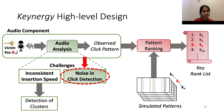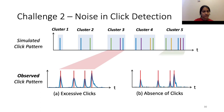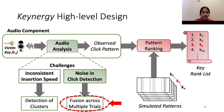Now that we've solved the first challenge, we move on to the second challenge, which is noise and click detection. If we take a particular cluster, such as cluster three in this case, and look at its corresponding observed click pattern, we observe that there could be excessive clicks detected. This could happen due to noise during key insertion or errors in the click detection algorithm. Similarly, there could be a case where a particular cluster has fewer clicks than required. In order to solve the problem of detecting the wrong number of clicks, we propose fusing information across multiple key insertion trials. By doing so, we eliminate the noise and obtain a click pattern that most likely corresponds to the underlying click pattern.